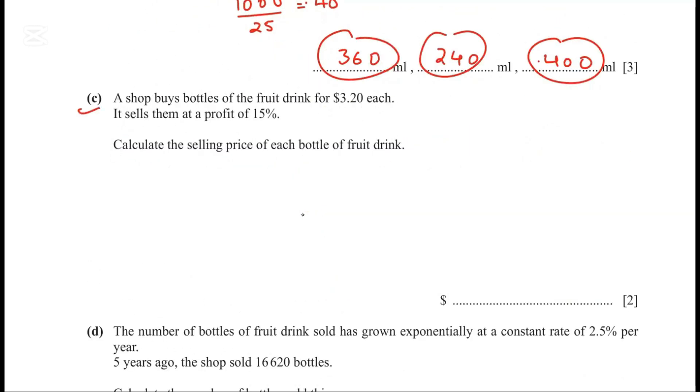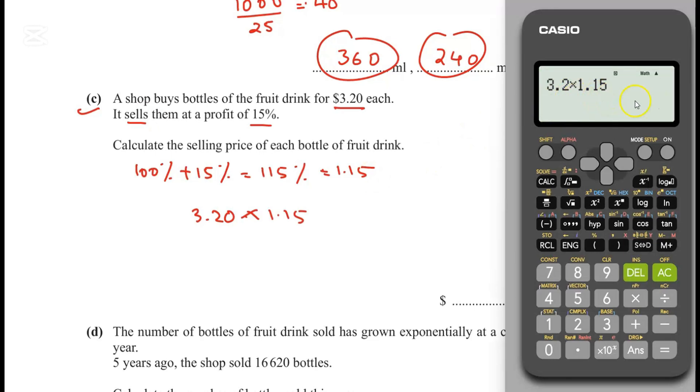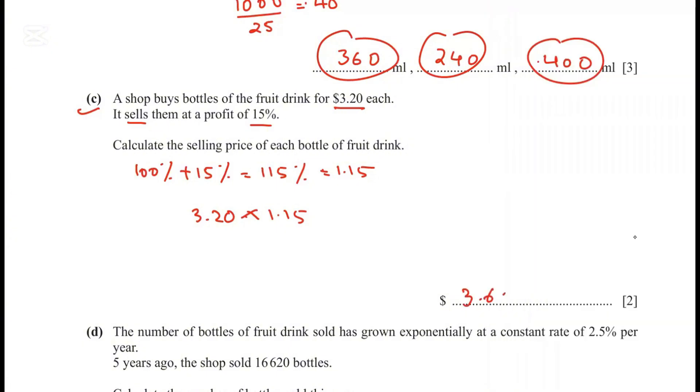Question part C. A shop buys bottles of fruit drink for $3.20 each and sells them at a profit of 15%. Calculate the selling price of each bottle. We need to increase $3.20 by 15%. So 100% plus 15% is 115%, and the decimal equivalent is 1.15. Multiply 3.2 times 1.15, which equals $3.68.